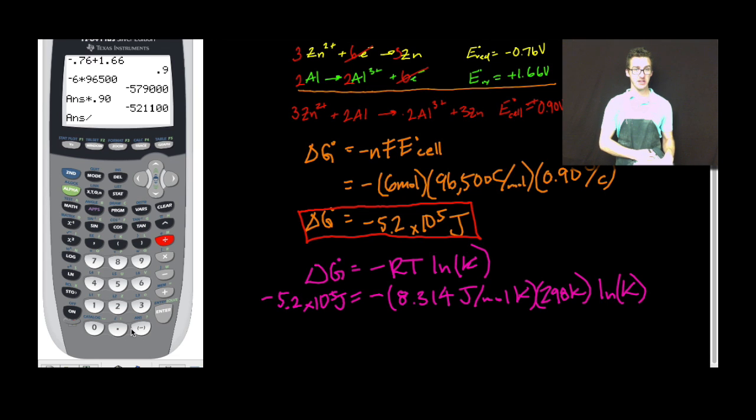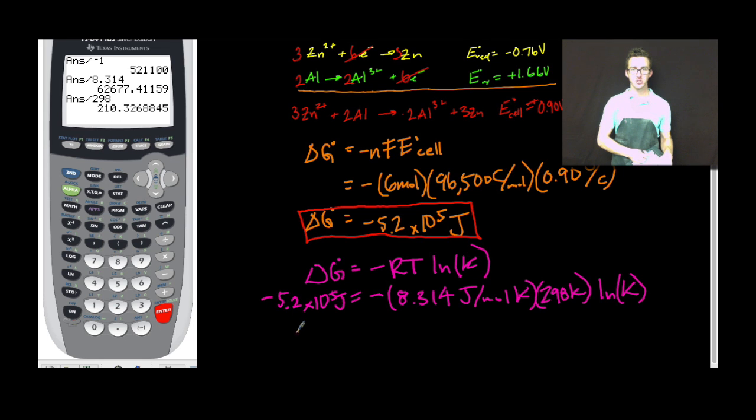I'm going to take my value for delta G, divide it by negative 1, enter. Divide that by 8.314, enter. Divide that by 298, enter. What I end up with, 210 is equal to the natural log of K, our equilibrium constant.